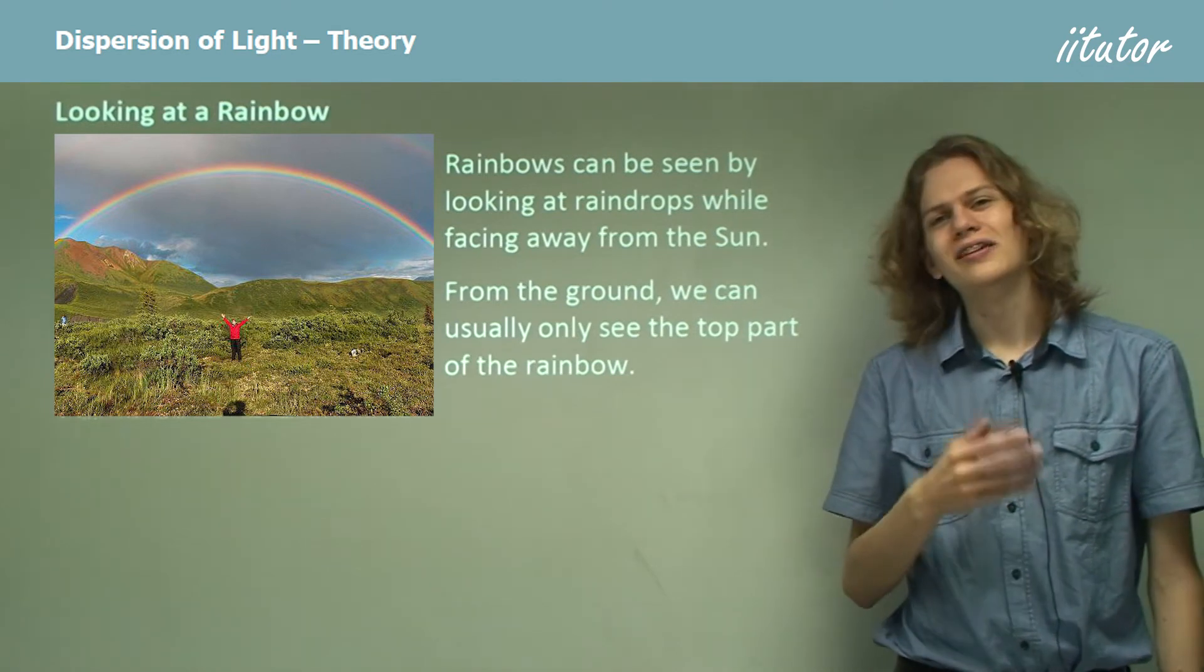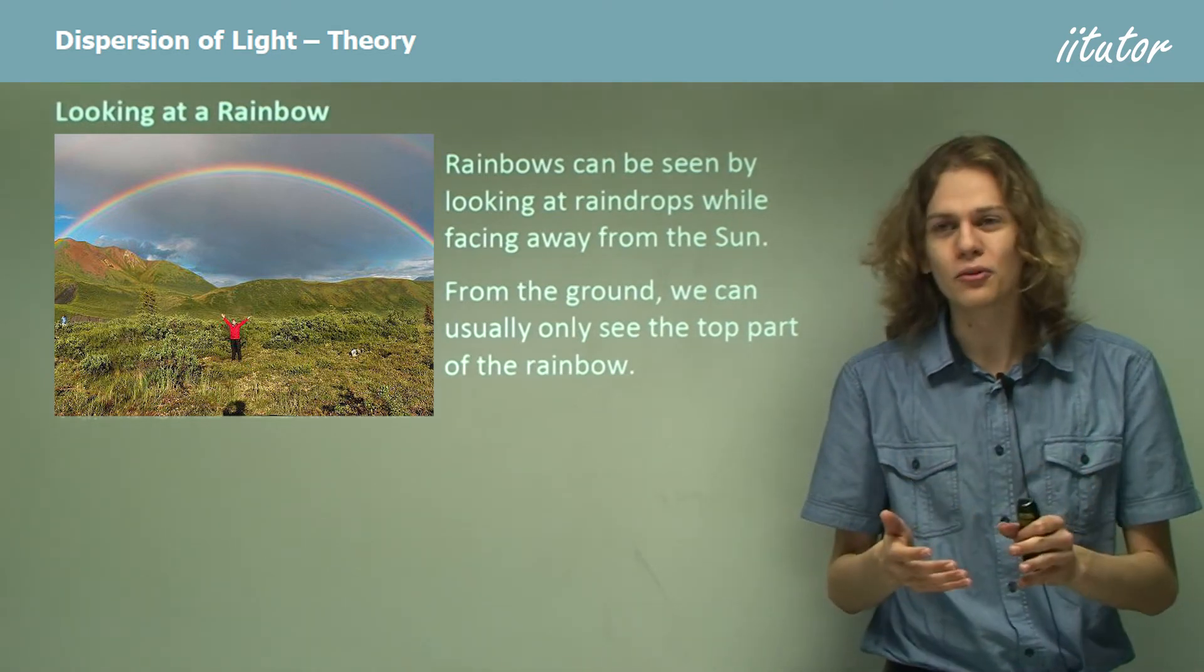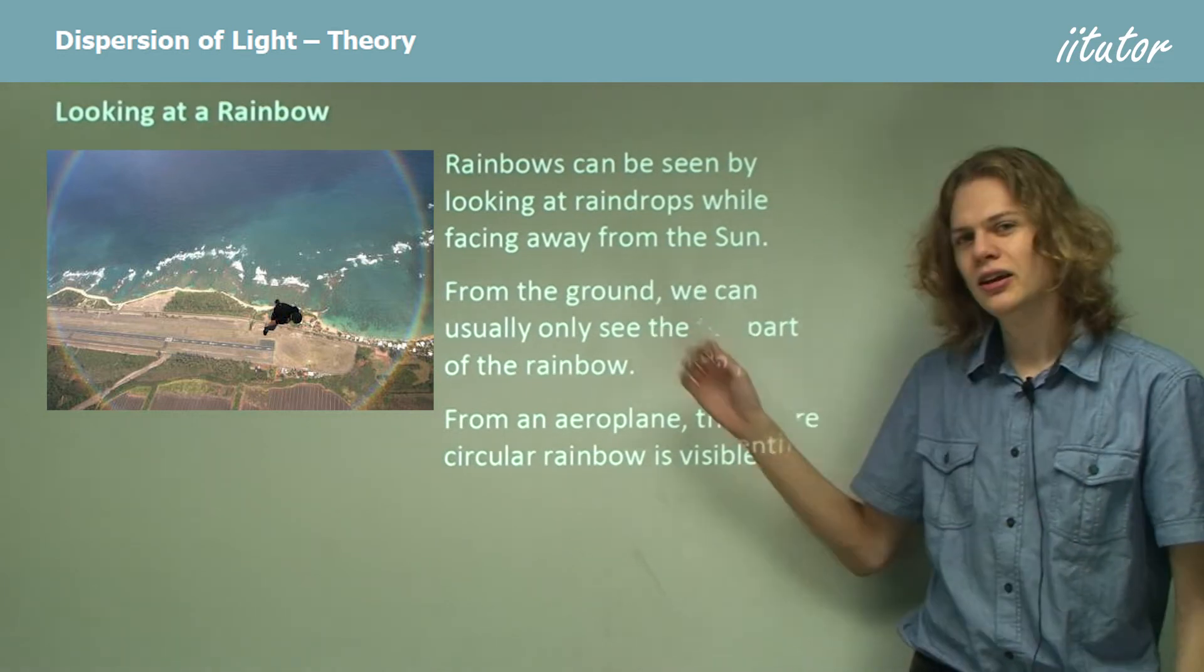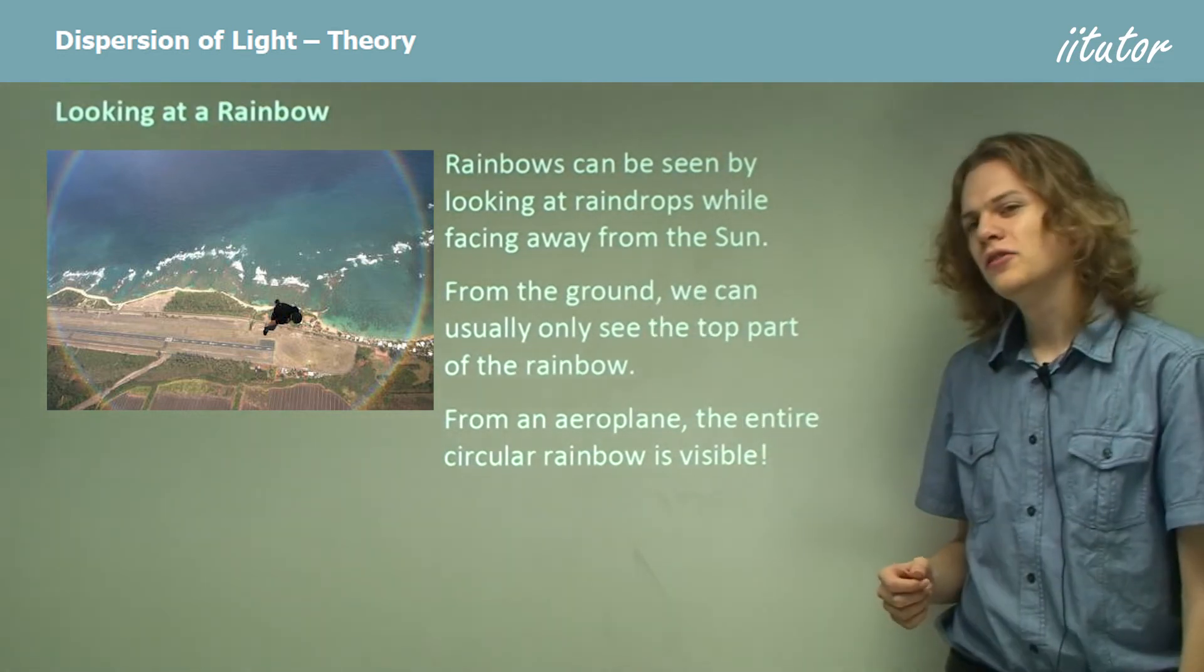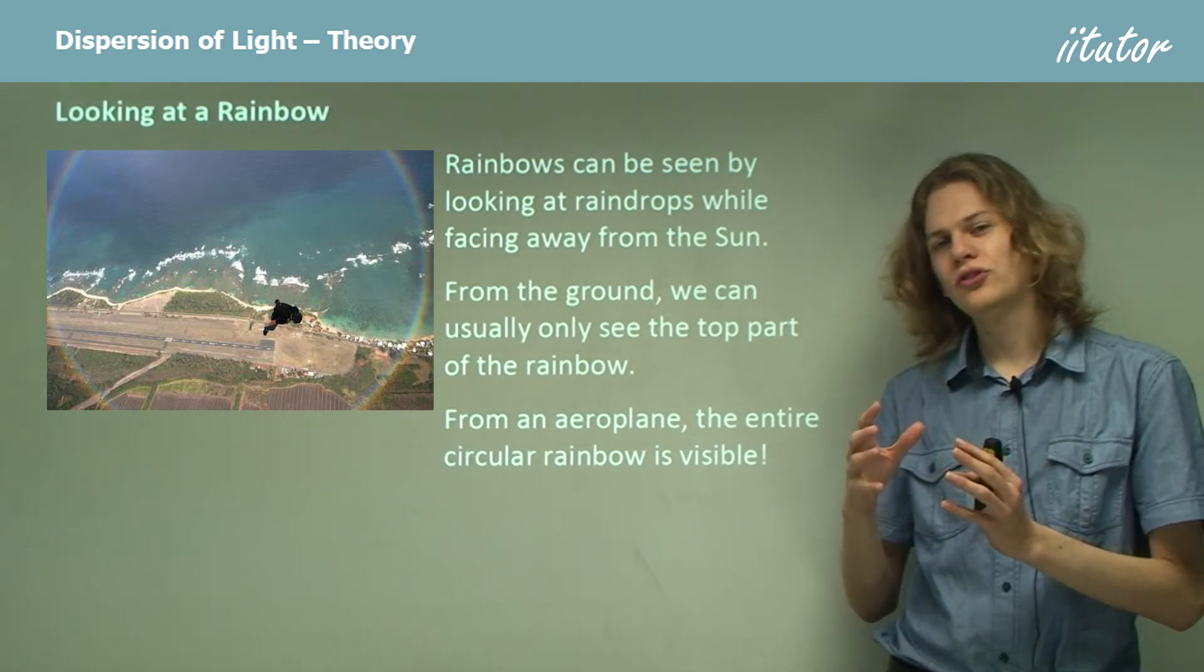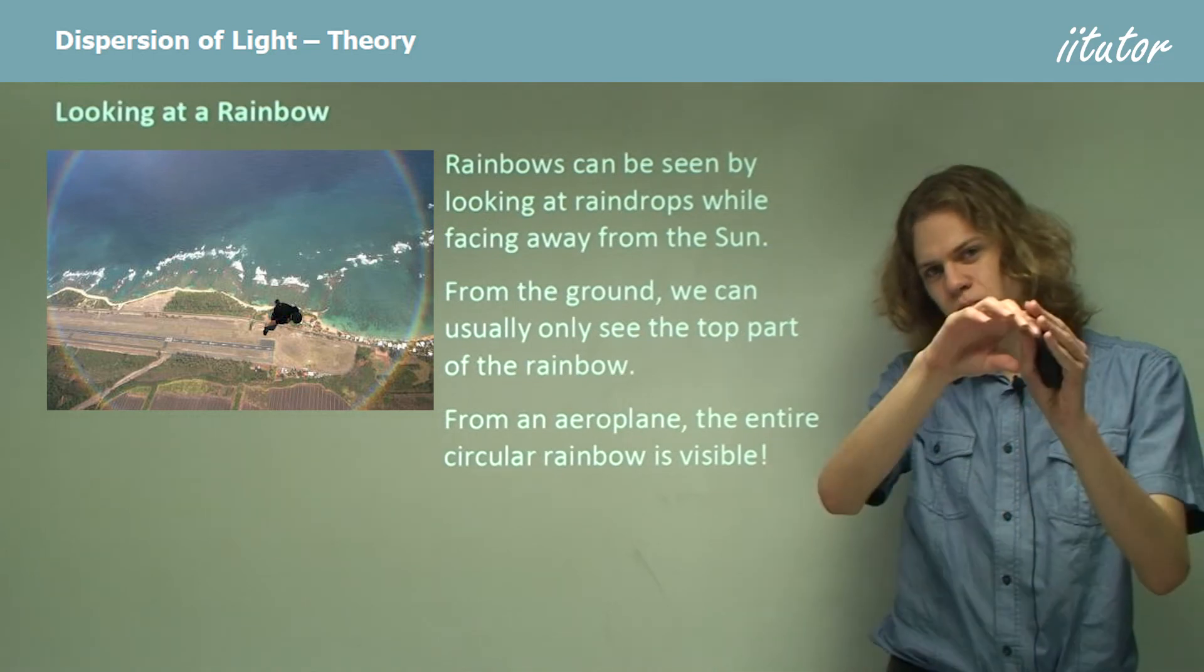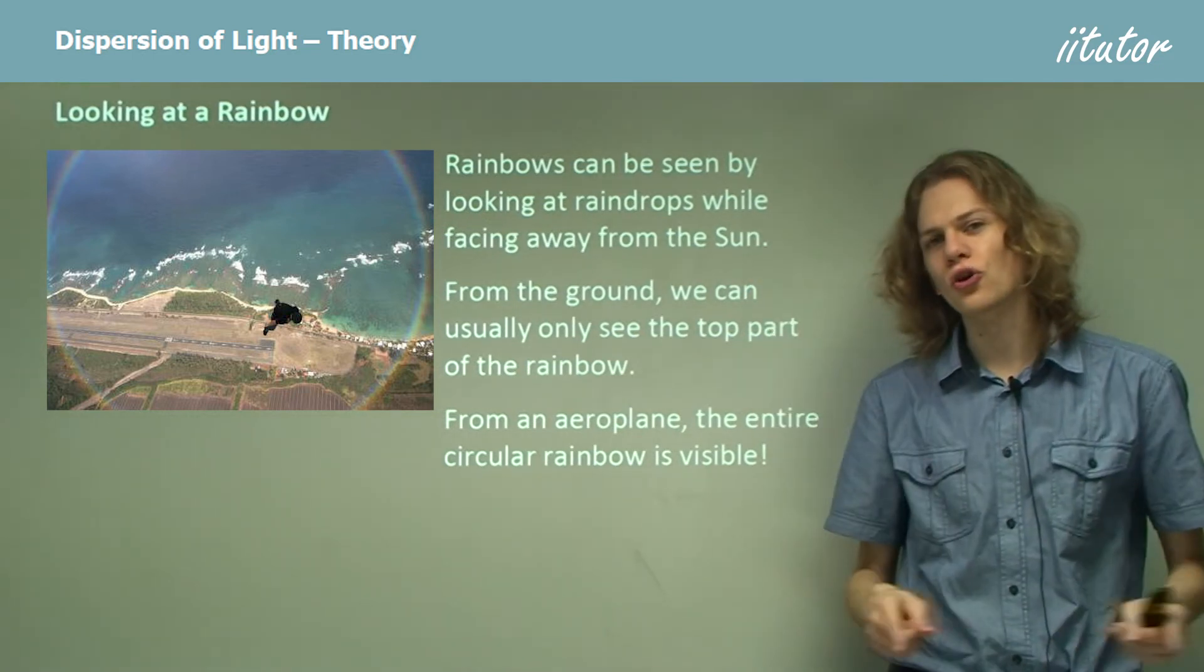So what does the rest of it look like? Well, if you're in an airplane looking down at a rainbow, then you can see it. It'll look like a circle, as we can see in this photograph. It encircles almost the entire picture here. And this is because the water droplets that are able to refract the sunlight into your eyes aren't just part of a circle, but the whole circle all the way around.